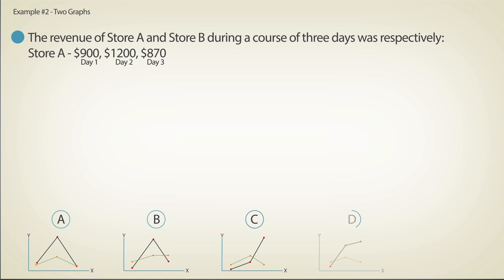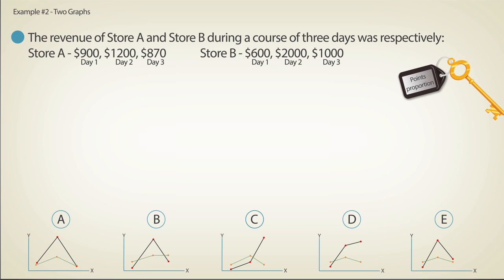Here, two graphs depict the revenue of two stores over the course of three business days. Our key feature for elimination in this case would be the proportion between the points of the two graphs for each of the three days. Since we don't know which graph resembles which store, we will also need to look for slopes.